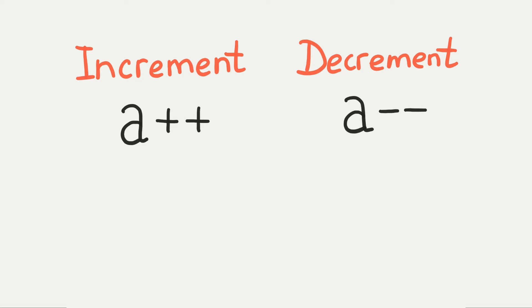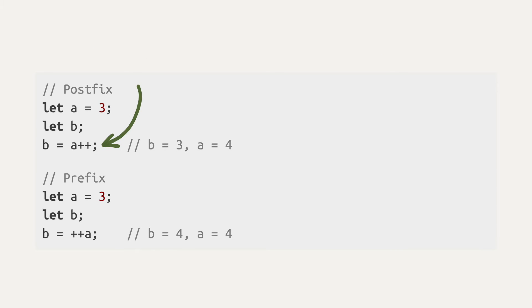There are two ways to use them, and it's easy to understand with an example. If you put plus plus after the variable name — this is a postfix notation — then the actual adding happens after the value is returned. This is why b is 3 here — it gets the value before a is changed.